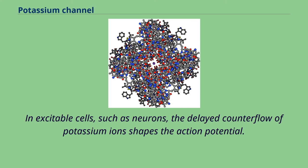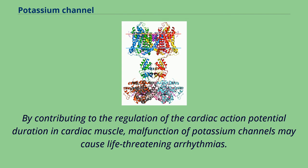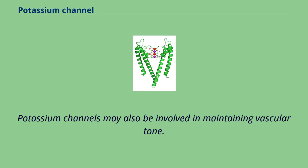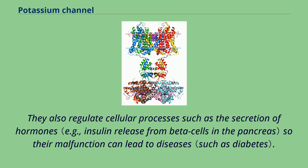In excitable cells such as neurons, the delayed counterflow of potassium ions shapes the action potential. By contributing to the regulation of the cardiac action potential duration, malfunction of potassium channels may cause life-threatening arrhythmias. Potassium channels may also be involved in maintaining vascular tone and regulating cellular processes such as hormone secretion, so their malfunction can lead to diseases.